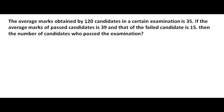The next problem: the average marks obtained by 120 candidates in a certain examination is 35. The average marks of passed candidates is 39 and that of failed candidates is 15. The number of candidates who passed the examination is what? Total students is 120 with average 35, divided into two groups — passed and failed — which when combined give the total.